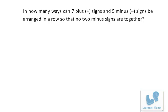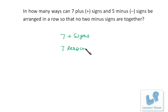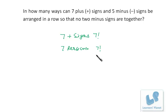Before we do this question, I would just like to ask a simple question. If we have to arrange seven plus signs, there are seven factorial ways — isn't it? Most of the students make the same mistake. Seven persons can be arranged in seven factorial ways, but seven plus signs cannot be arranged in seven factorial ways.